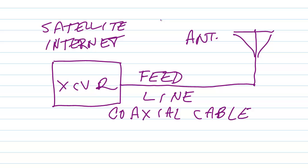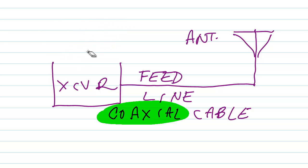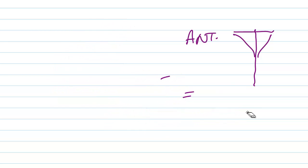But coaxial cable, as the term coaxial means, has two conductors that share the same axis. Basically, if we look at a cross section of a coaxial cable, it has an outer conductor which is shaped like a long cylinder or braid of wire fabricated into a long tube.